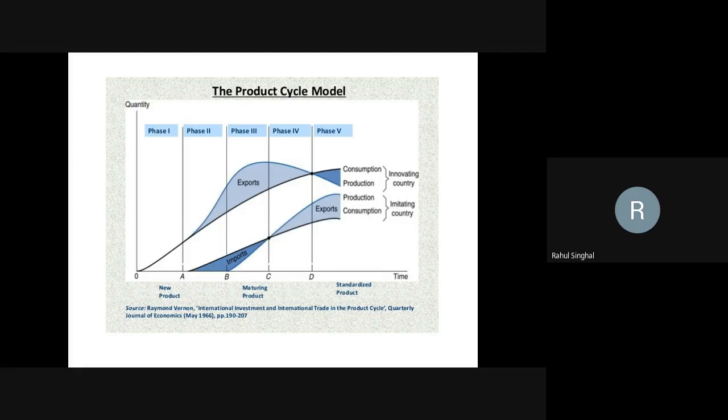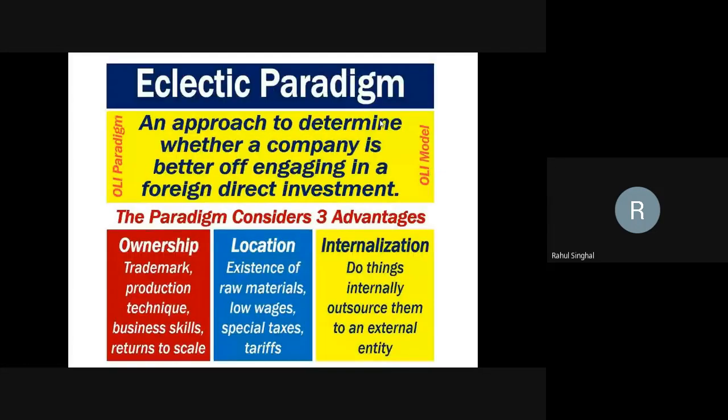So that's how, with the passing of the phases of a product's lifecycle, international business evolves. Based on the study of the product lifecycle, we are able to identify when to export, when to set up a manufacturing unit in another country, and when to start importing and stop manufacturing. So all these decisions can be taken based on the study of product life. That's how international business happens as per the product lifecycle theory.